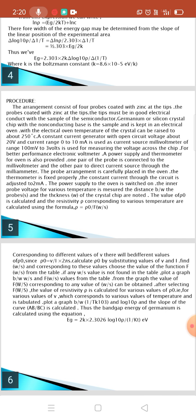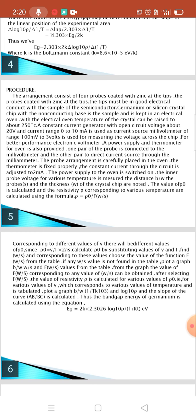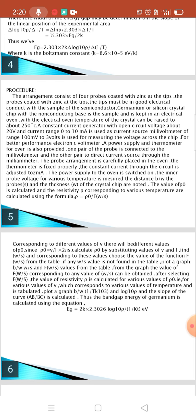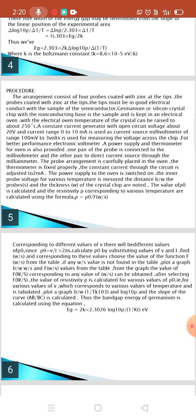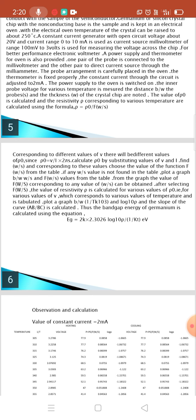Probably the constant current through the circuit is adjusted to 2 mA. The power supply of the power to the oven is switched on. The inner probe voltage for various temperatures is measured. The distance between the probes and the thickness of the crystal chip is noted. The value of rho zero is calculated and the resistivity rho corresponding to various temperatures are calculated using the formula rho is equal to rho zero by f(W/X). Corresponding to different values of V there will be different values of rho zero, since rho zero is equal to V by I into πS. Calculate rho zero by calculating values of V and I. Find W by X and corresponding to these values choose the value of function f(W/X) from the table.